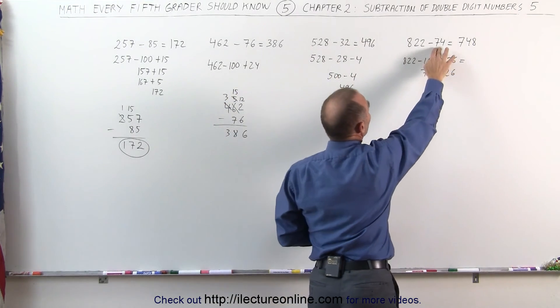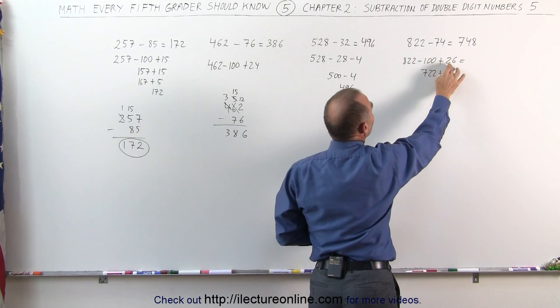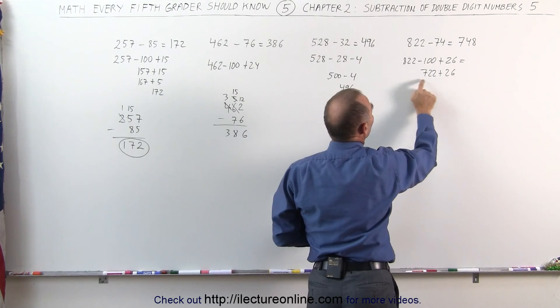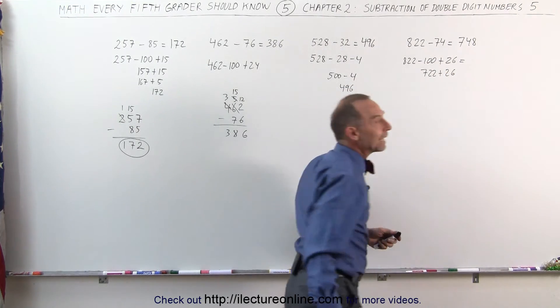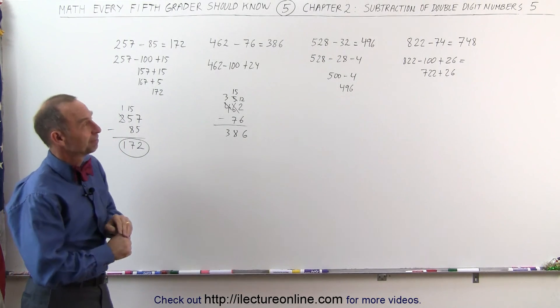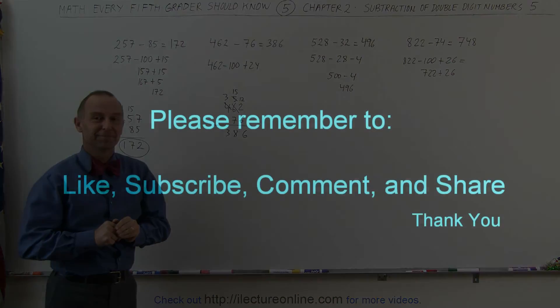Or you can say that I'm going to subtract 100 first, and then add the 26 later. 822 minus 100 is 722. Add 26, I get 748. And that's the answer. That's how it's done.